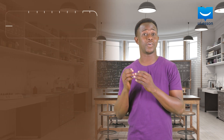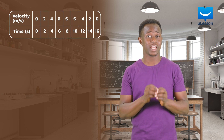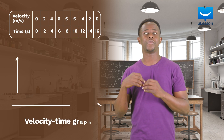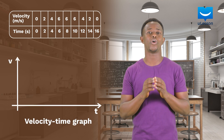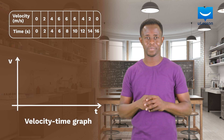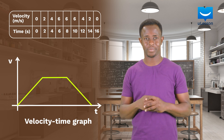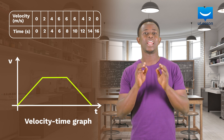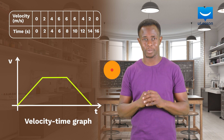Assuming we are given the data of the motion of a car as seen on this table, we can plot its velocity-time graph with velocity on the vertical axis and time on the horizontal axis. Doing that will give us this graph. Let's use this graph to illustrate some important concepts.